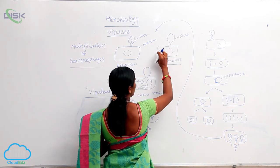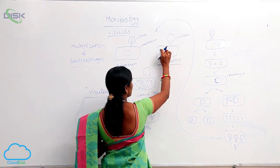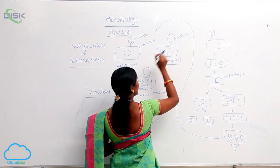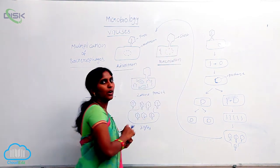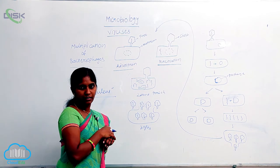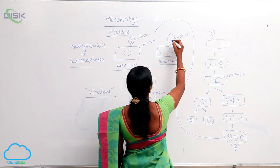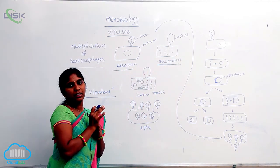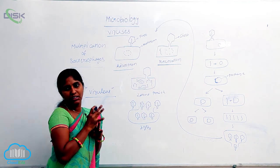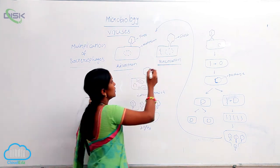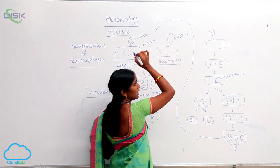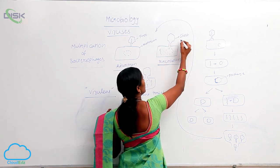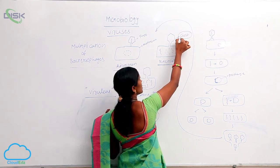Inside the bacterium, there are two types of genomes: one is bacterial DNA, and another is viral DNA — that is the integrated DNA. The protein coat is left outside of the bacterium after transfer of the DNA inside. That left protein coat outside of the bacterium is called a ghost.